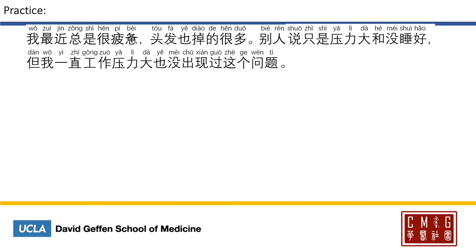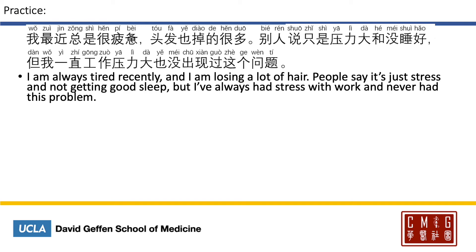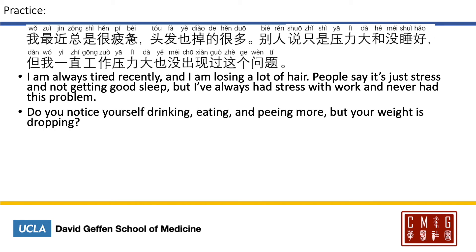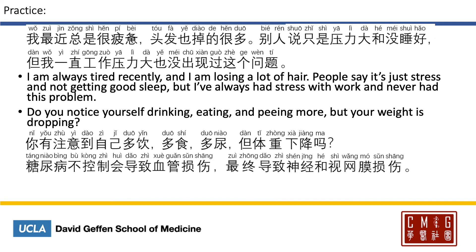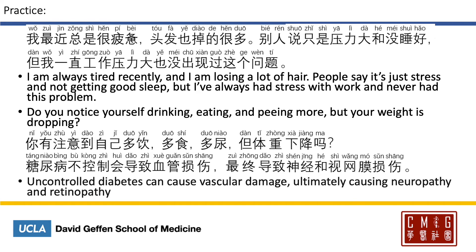Here are some practices. When your patient says 我最近总是很疲惫，头发也掉得很多。别人说只是压力大和没睡好，但我一直工作压力大也没出现过这个问题。 Your patient means: I'm always tired recently and I've been losing a lot of hair. People say it's just stress and not getting good sleep, but I've always had work stress and never had this problem. To say 'Do you notice yourself drinking, eating, and urinating more, but your weight is dropping?' that is: 你有注意到自己多饮、多食、多尿，但体重下降吗？ Lastly, to say 糖尿病不控制会导致血管损伤，最终导致神经和视网膜损伤 — that would be: uncontrolled diabetes can cause vascular damage, ultimately causing neuropathy and retinopathy.